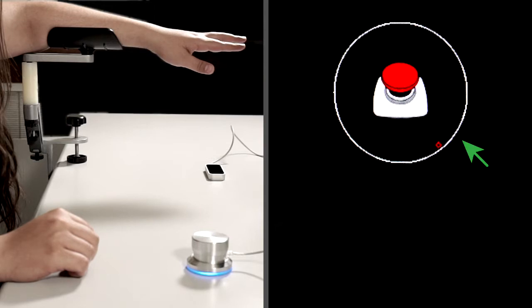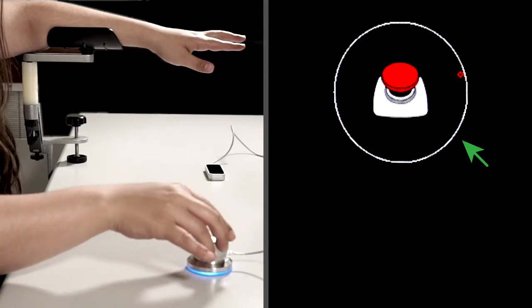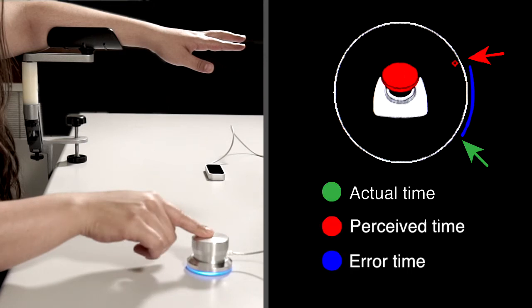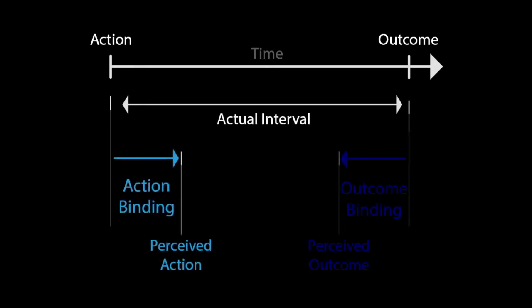In this paper we investigated the sense of agency in touchless systems using the intentional binding paradigm. Previous studies have shown that perceived time of a voluntary action and its sensory outcomes are shifted towards each other, so that the interval between action and outcome is perceived as shorter than it actually is, leading to a perception of compression of time.